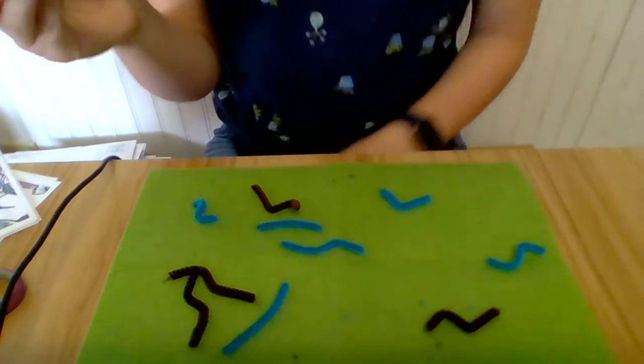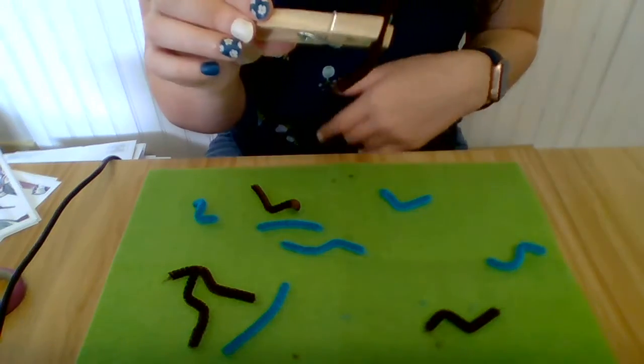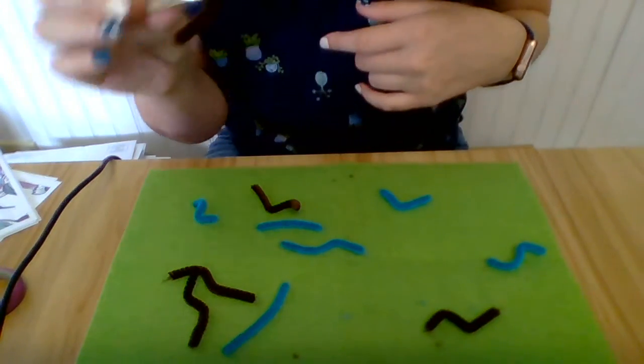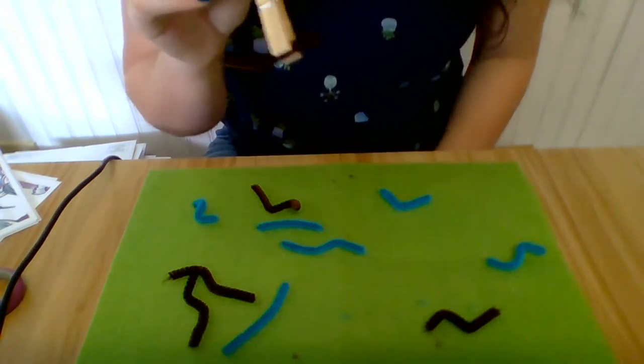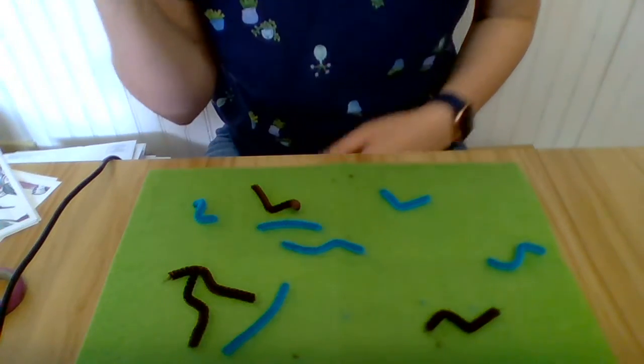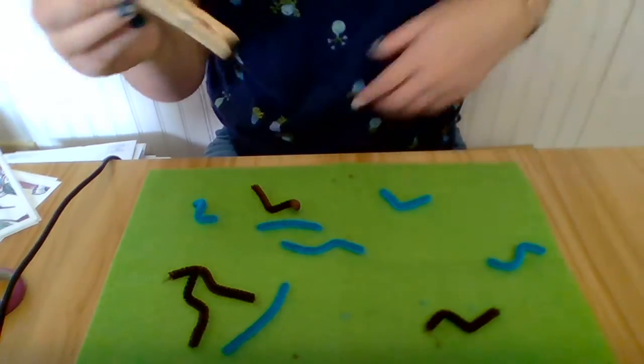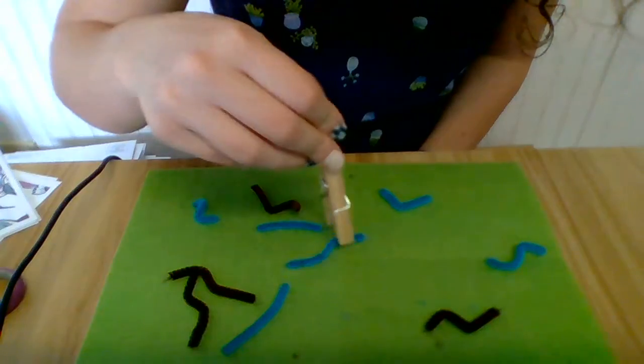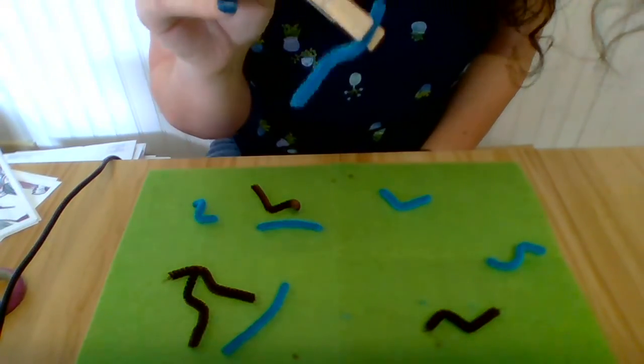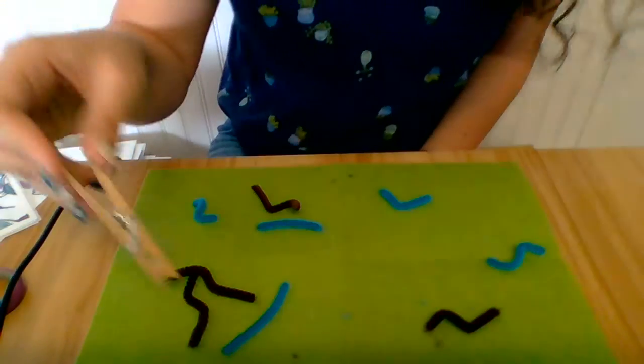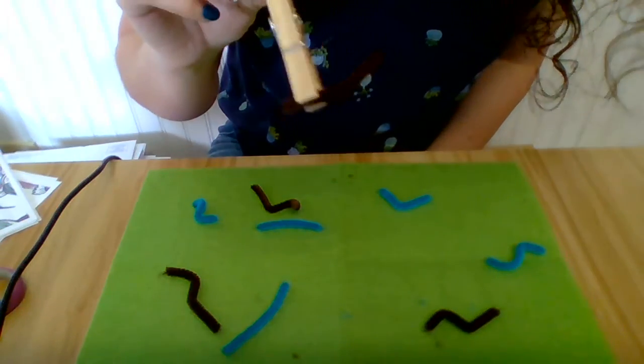And now we have a worm. We're not going to eat these worms like the birds because these are not real worms. But we're still pretending that we're birds, and we want to collect as many worms as we can. The more food we have, the better. That way we're not hungry and we can live.